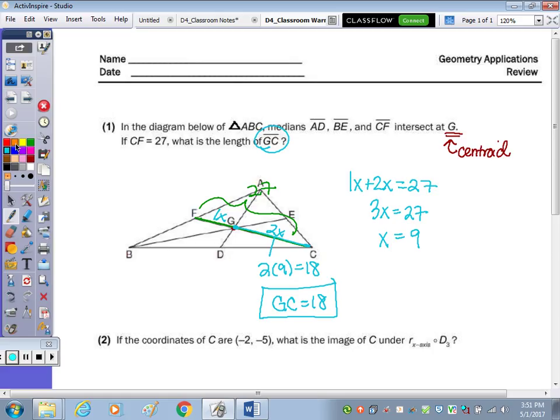Just to check, 1x would be 9, and 9 plus 18 is 27, it is.